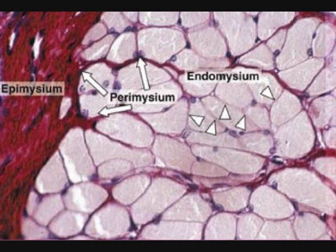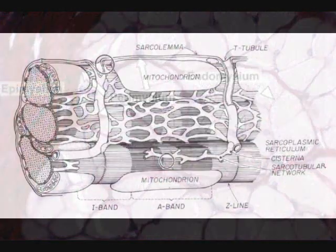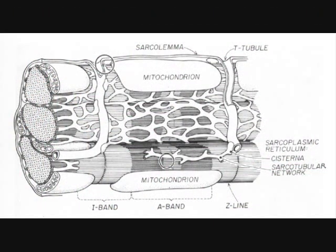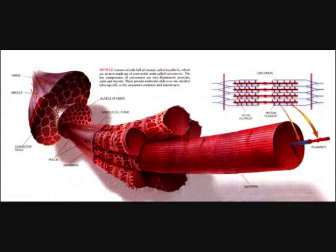The skeletal muscle is also made of several muscle fibers such as the cell membrane, the sarcolemma, the sarcoplasm, the sarcoplasmic reticulum, and myofibrils, also known as myosin and actin.